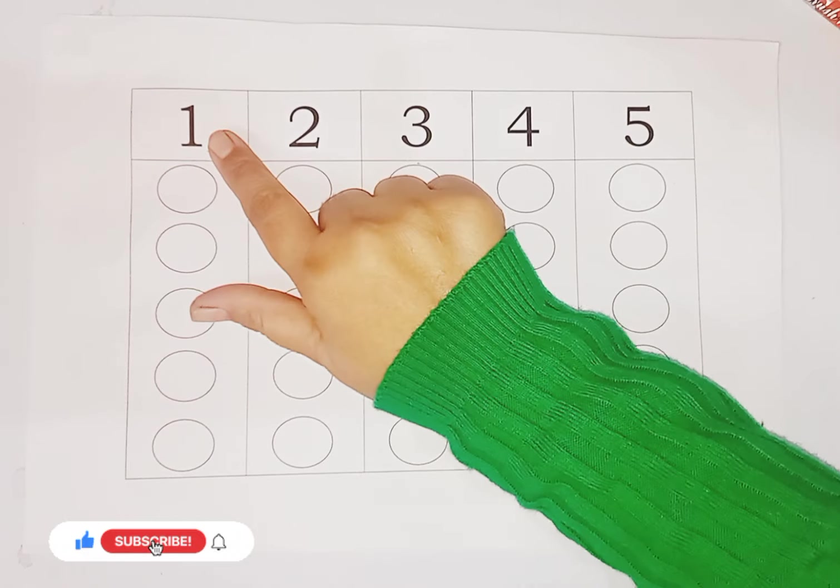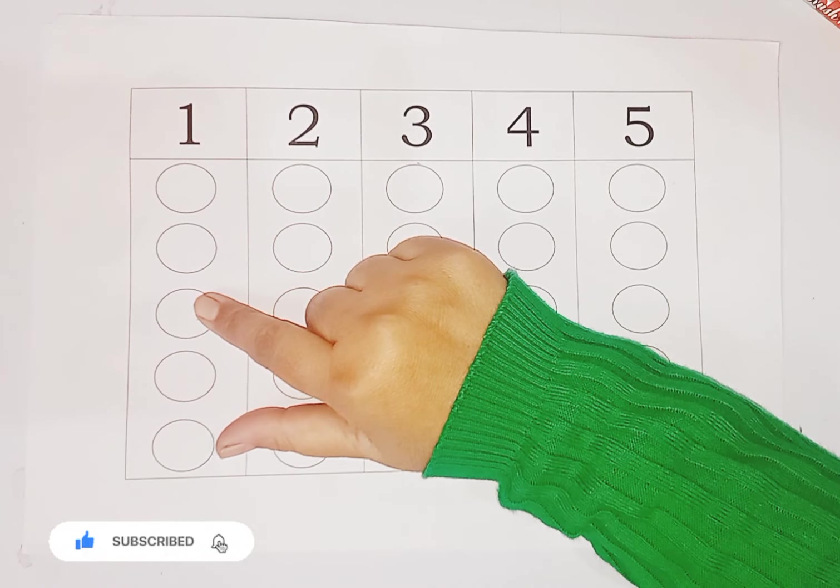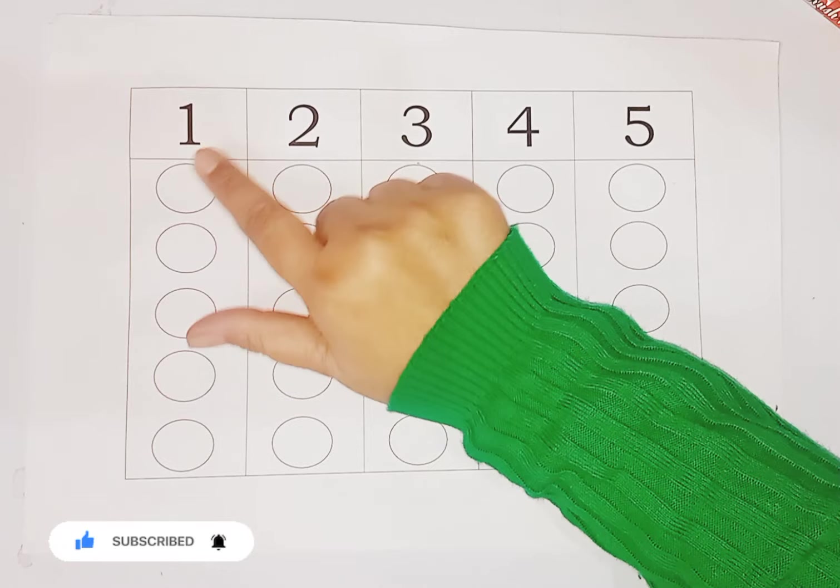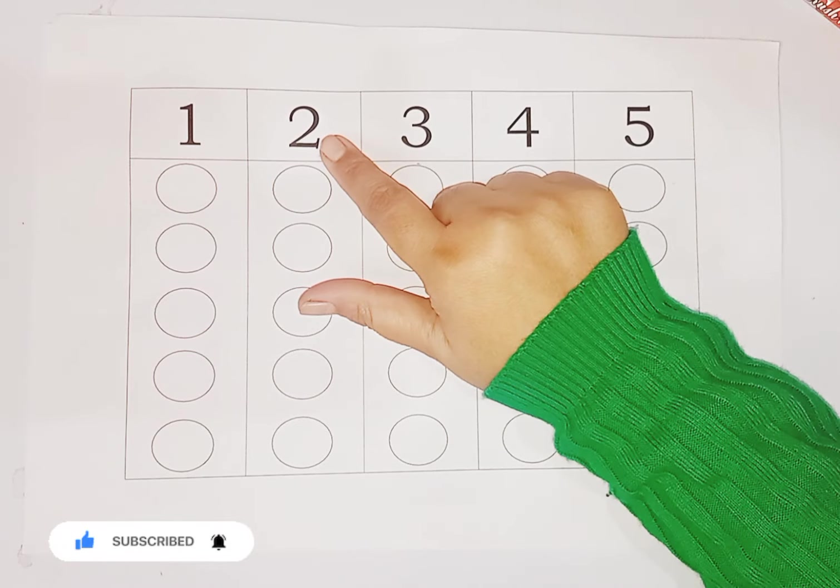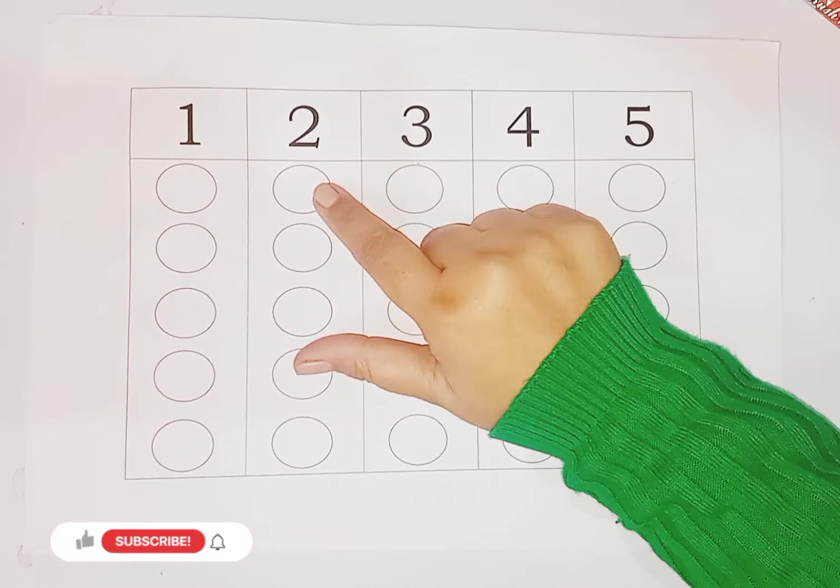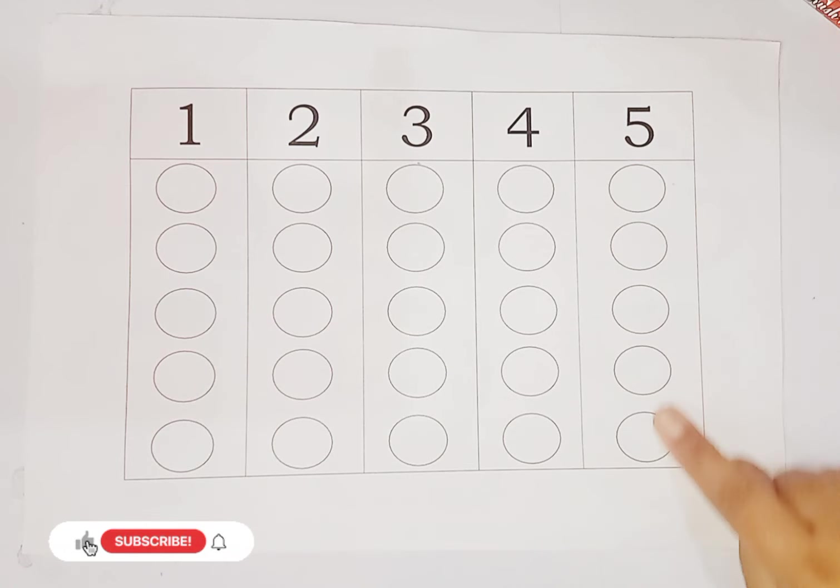So kids, we have numbers and round circles. We have one number, we color one circle. Like this, two number, we color two circles. Like five number, five circles.